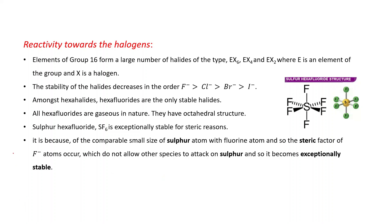Reactivity towards the halogens. Elements of group 16 form a large number of halides of type EX6, EX4, and EX2. That is hexahalides, tetrahalides, and dihalides. Where E is the group 16 element and X is the halogen. The stability of the halides decreases in the order F minus, Cl minus, Br minus, I minus. It means fluorides are the most stable and iodides are the least stable.